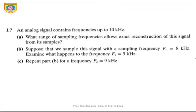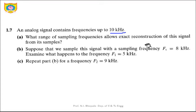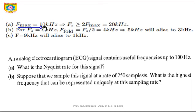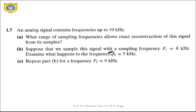Next numerical: an analog signal contains a frequency up to 10 kilohertz. What range of sampling frequencies allows exact reconstruction from its samples? For faithful reconstruction, FS must be greater than or equal to 2·F_max. Since F_max = 10 kHz, FS must be at least 20 kilohertz.